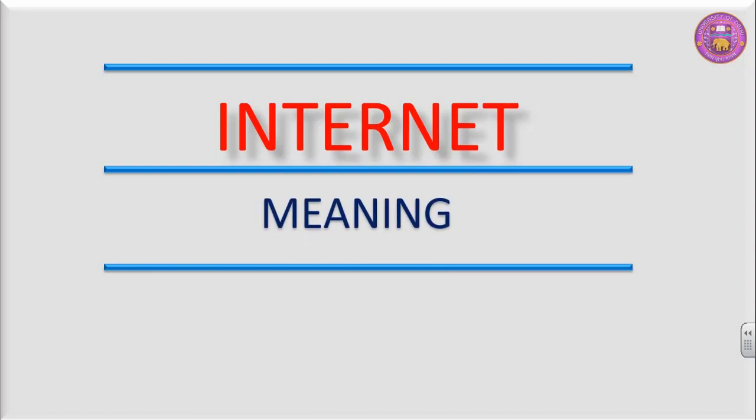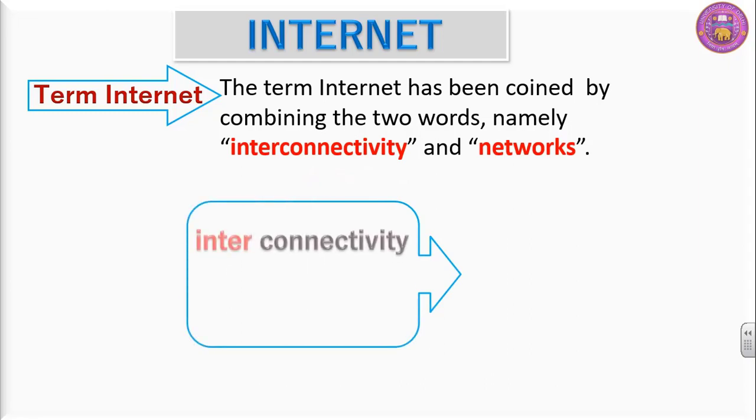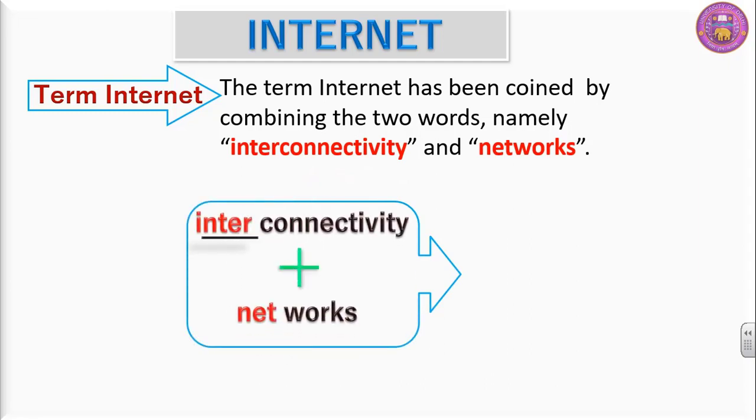Internet meaning. The term internet has been coined by combining two words namely interconnectivity and networks. We took inter from interconnectivity and net from networks and it makes up one word that is internet.